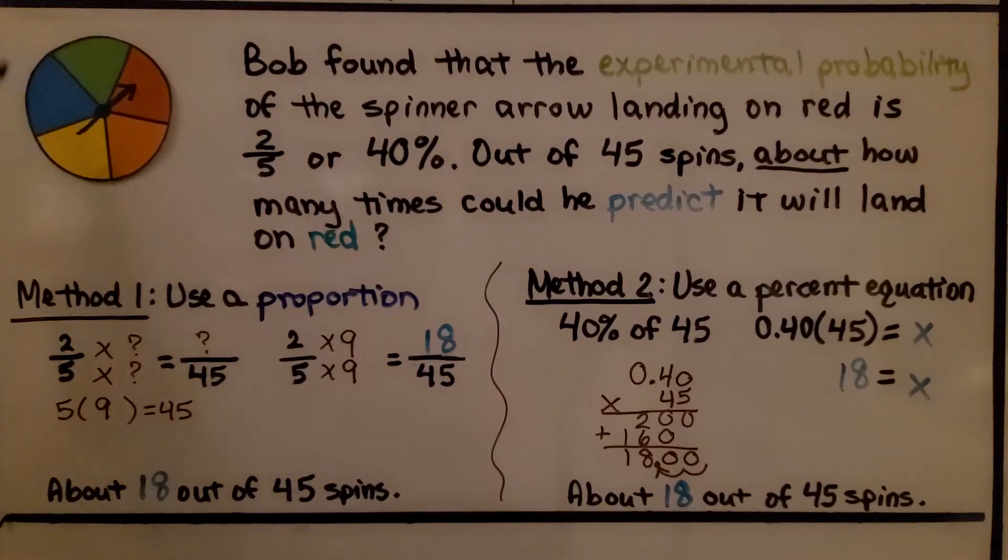Here we have a spinner with 5 colors. Bob found that the experimental probability of the spinner arrow landing on red is 2/5, or 40%. Out of 45 spins, about how many times could he predict it will land on red?